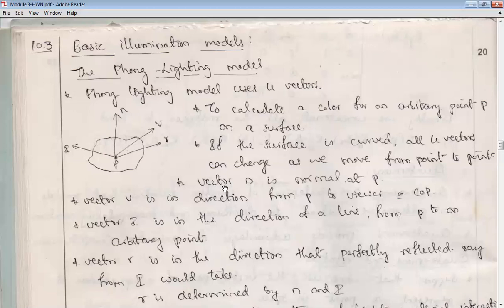Vector N is the normal at point P — always perpendicular to the given surface. Vector V is the direction from P to the viewer, or center of projection (COP). The center of projection is the point where all projections meet — the best example is our eyes, where all scenes project onto the retina, allowing us to identify the complete scene in front of us.